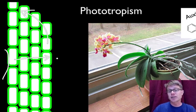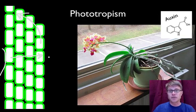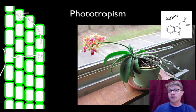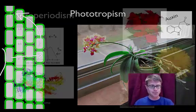So what that allows plants to do is it's a physiological response to changes in the amount of light — they can grow towards or away from the light, and they do that using auxin.